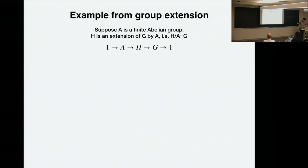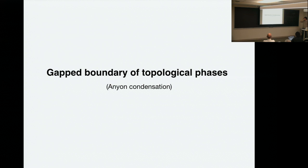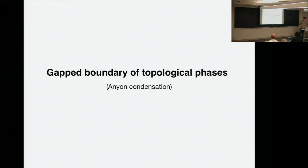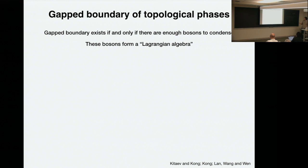So now I want to go to gapped boundaries. A gapped boundary for topological phases is sort of the same as a condensation of anyons. Not only can we talk about the topological phase itself, we can also study a transition out of this phase by thinking about anyon condensation — a particular set of transitions by condensing certain bosonic anyons.